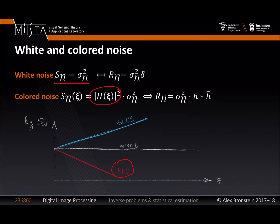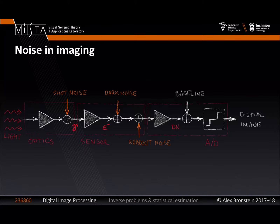The autocorrelation of colored noise — white noise colored by the action of system H — is simply H * H̄ (convolution of the impulse response with its mirrored version). This deterministic quantity is sometimes called the autocorrelation of H. When you compute autocorrelation in MATLAB, this is what you compute. Now let's say a few words about noise in imaging. Let's zoom into a single pixel and see what happens inside.